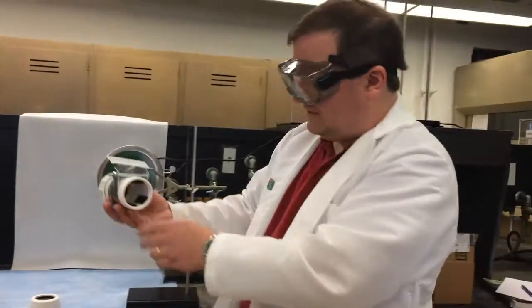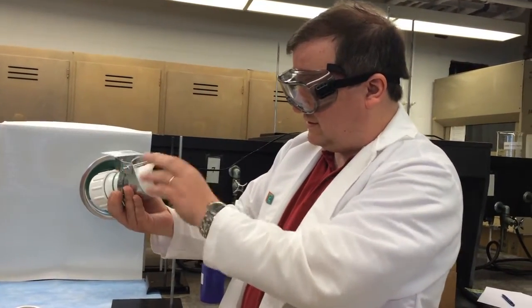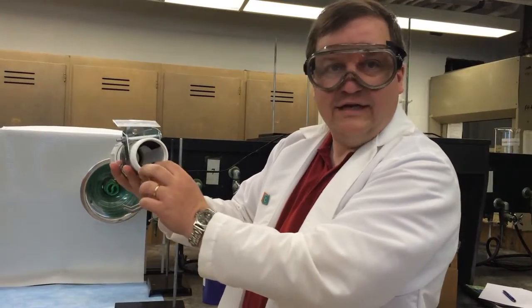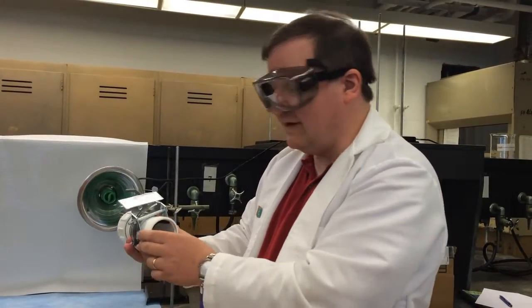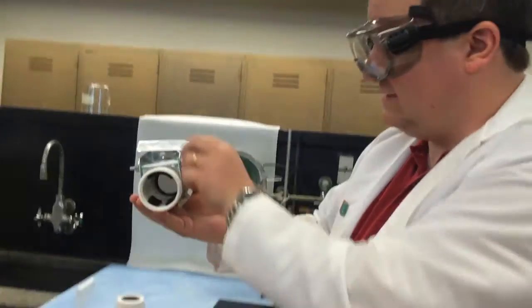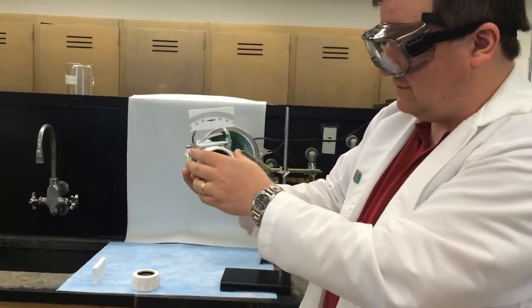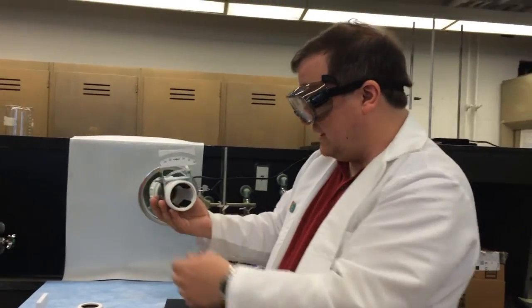You also need to line up the polarimeter itself. You can see we've got the grid up here where you can read the angle and the slot down here where we're going to put a cuvette later. So you want things lined up so the angle grid is at the top and the slot is at the bottom. We'll pull this up now so it's nice and vertical. Try to get it as straight as you can.